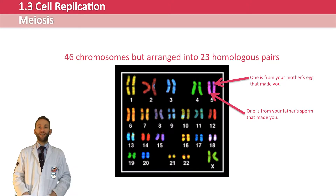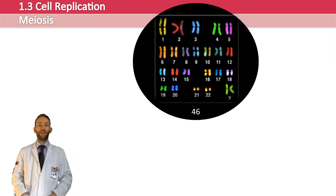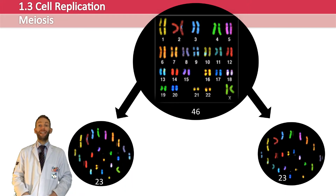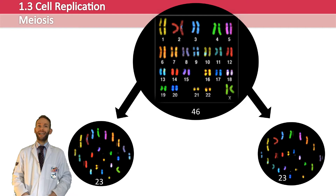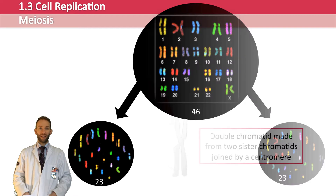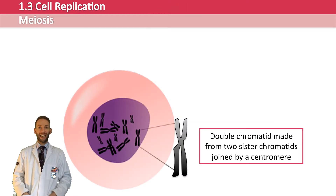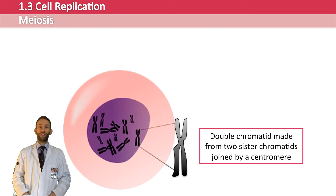In the first division of meiosis, one of each of these pairs needs to end up in each of the daughter cells to make haploid cells — so you'll have 23 in each. However, these two new cells then need to split again in the second division to make four cells. So just like in mitosis, we need to duplicate all our DNA before the cell undergoes meiosis, to make sure we have enough DNA to end up with four haploid cells. All those single chromosomes become double X-shaped chromosomes made up of sister chromatids, just as in mitosis.